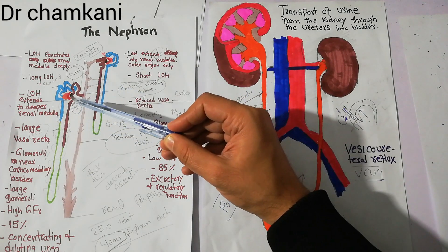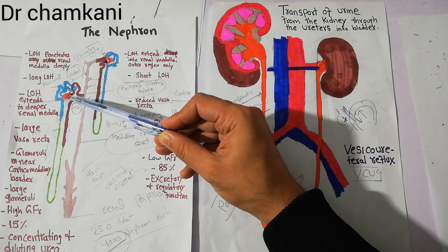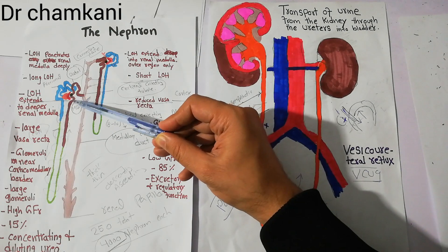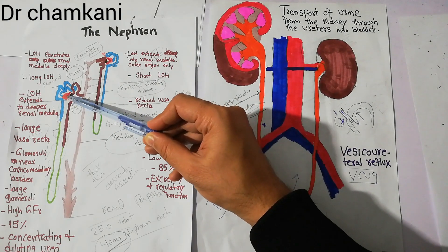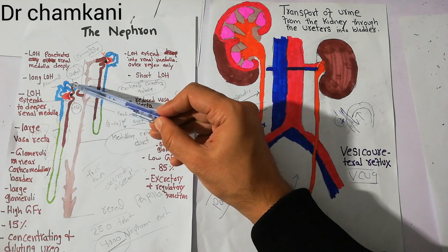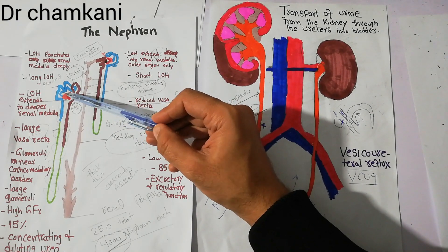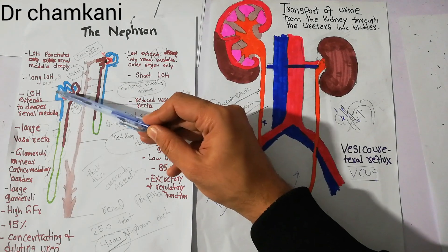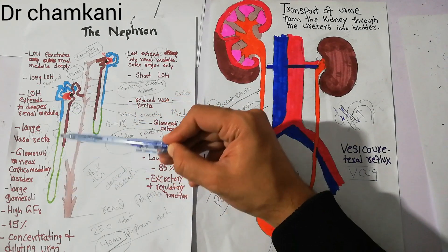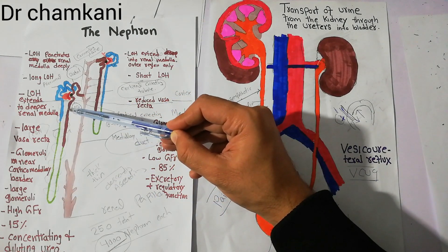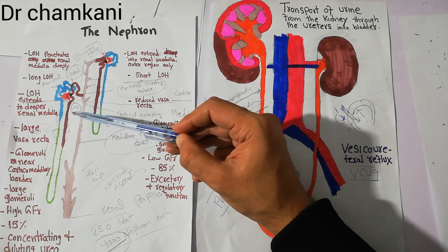Normally, blood comes and gets filtered at the glomerulus. After filtration, the fluid moves through the tubules and converts into urine.